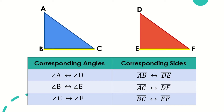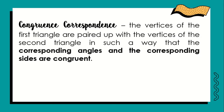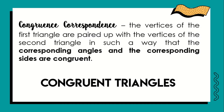These are the six corresponding parts of triangle ABC and triangle DEF. Take note that the correspondence between two triangles is any way of matching up their vertices, so we can form other possible correspondences between triangle ABC and triangle DEF. This means that the vertices of the first triangle are paired up with the vertices of the second triangle in such a way that the corresponding angles and the corresponding sides are congruent. This leads to the idea of congruent triangles, which will be the next part of this lesson.